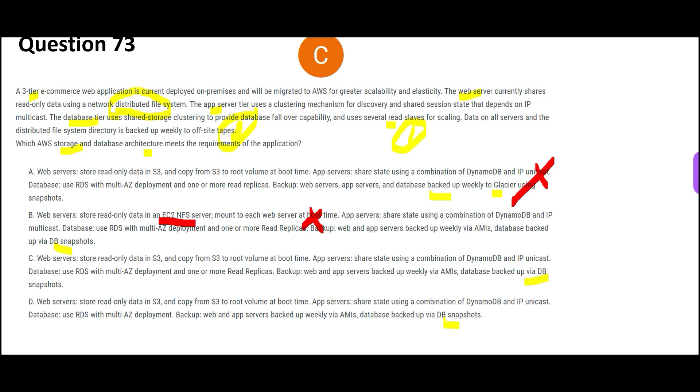Now answer has to be between C and D. D is wrong here because if you compare D and C, you can see only this portion is different. The RDS here is saying multi-AZ deployment and read replica; here only multi-AZ deployment. Do we need read replica? Yes, you see here it says requirement one: several read slaves for scaling.